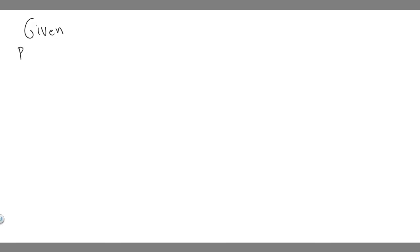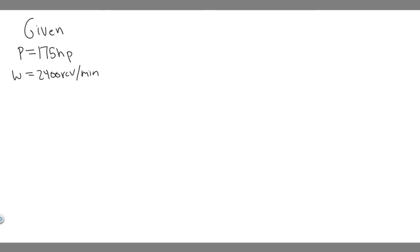So what are we given? We're given power — 175 horsepower. And then we're given that the angular velocity is 2400 revolutions per minute. So let's just start with Part A, which is finding the torque — how much torque does the aircraft engine provide?